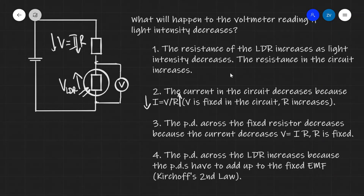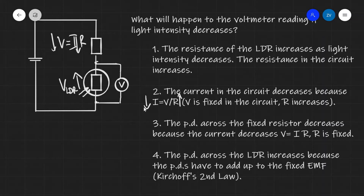The resistance of the LDR increases as light intensity decreases. This means that the total resistance in the circuit will be increasing. Now, if the resistance is increasing, the current will do the opposite — the current will be decreasing, because I is equal to V over R. We assume that the total EMF is fixed in the circuit, and if R goes up, I must go down. Afterwards, we're going to look at the potential difference across the fixed resistor.